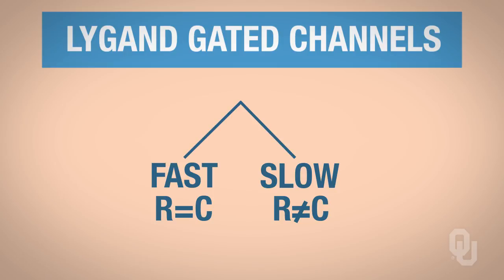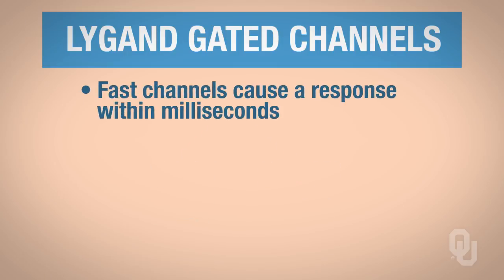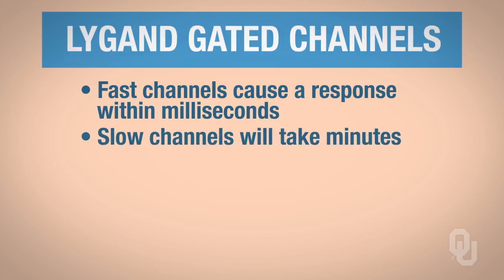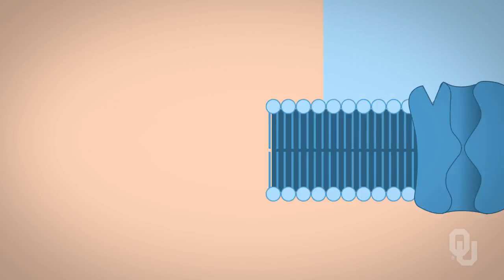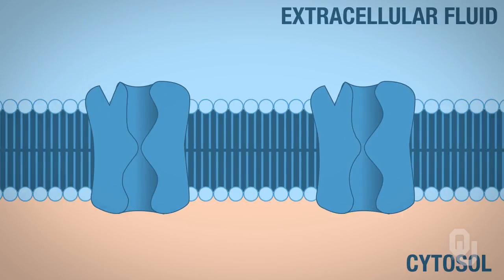Now fast channels are called that because they cause a response within milliseconds, whereas a slow ligand-gated channel will take minutes. So let's start with a fast ligand-gated channel. So with a fast ligand-gated channel, remember it's fast so the receptor and the ion channel are the exact same protein.